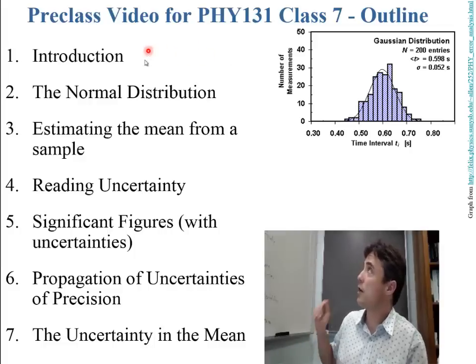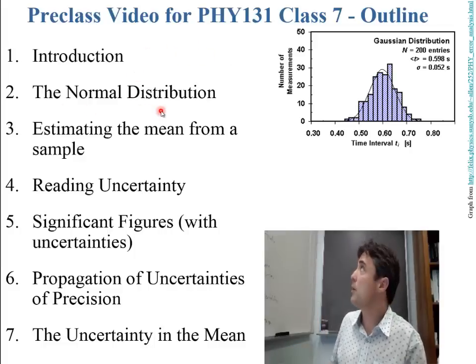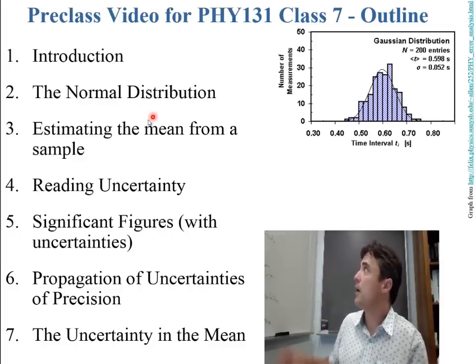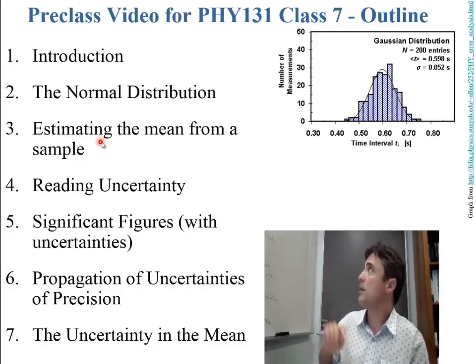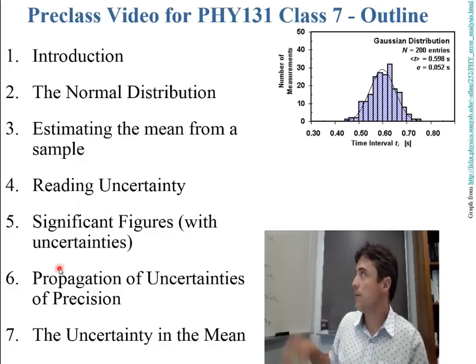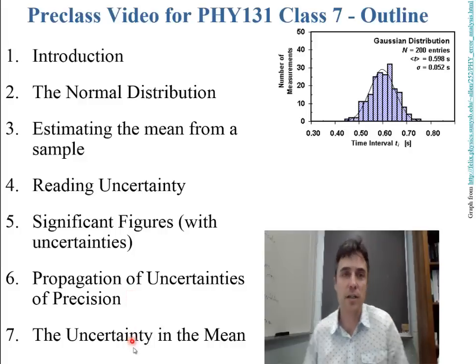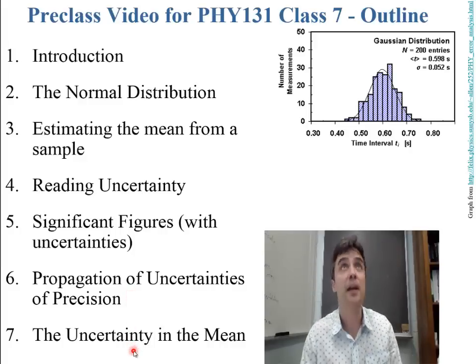The seven sections are: Introduction, the Normal Distribution (also called the Gaussian), Estimating the Mean from a Sample, Reading Uncertainty, Significant Figures, Propagation of Uncertainties, and the Uncertainty in the Mean.